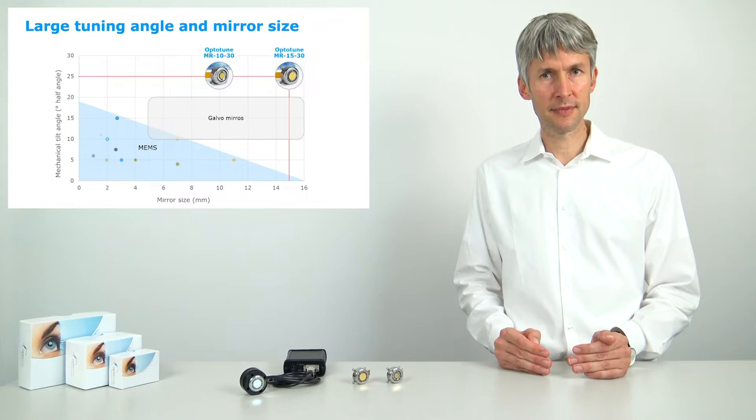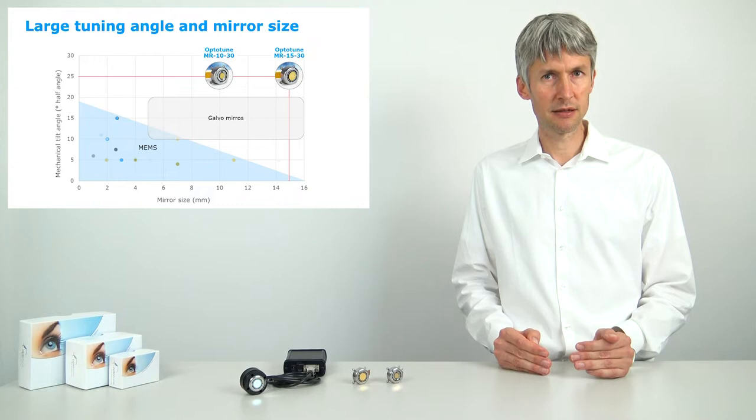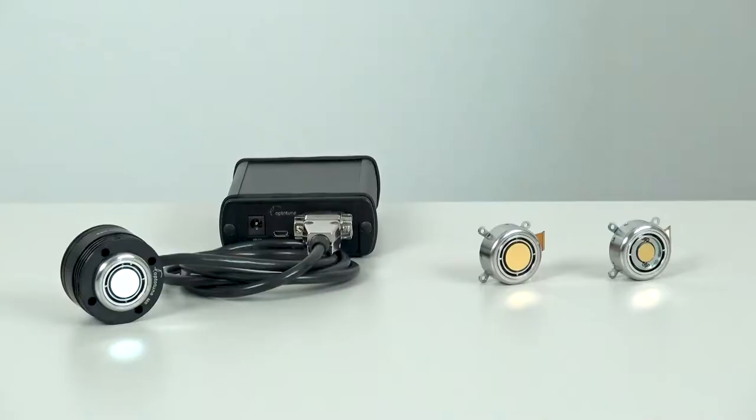Galvo mirrors on the other hand can have large mirror size and tilt angle, but they are basically two one-axis mirrors integrated in a scan head. This requires a lot of space, leads to double reflection losses and beam shifting because the rotation points of the two mirrors are not at the same location.